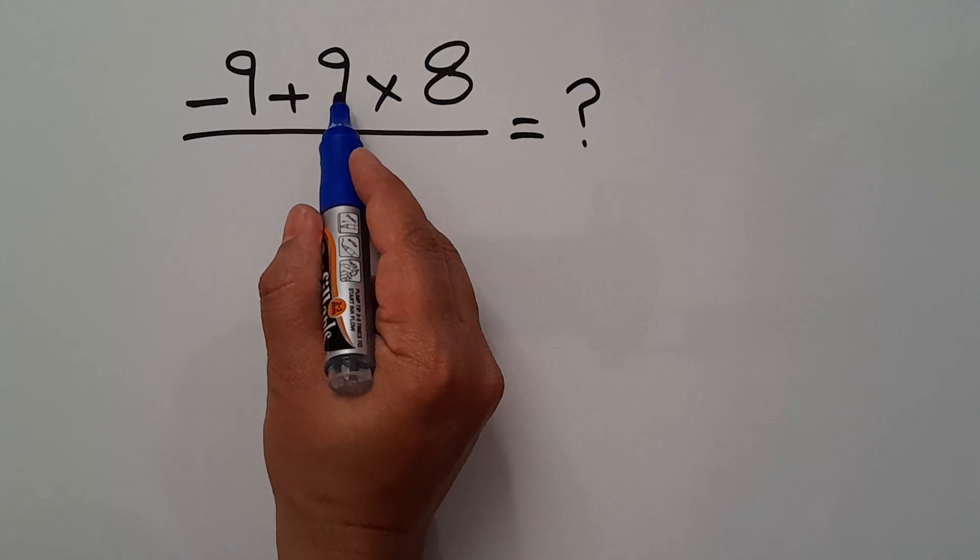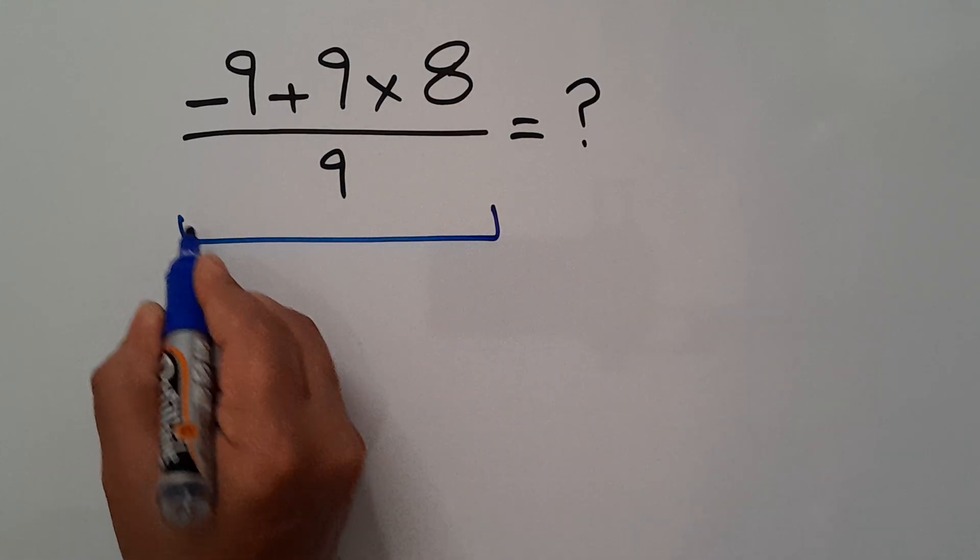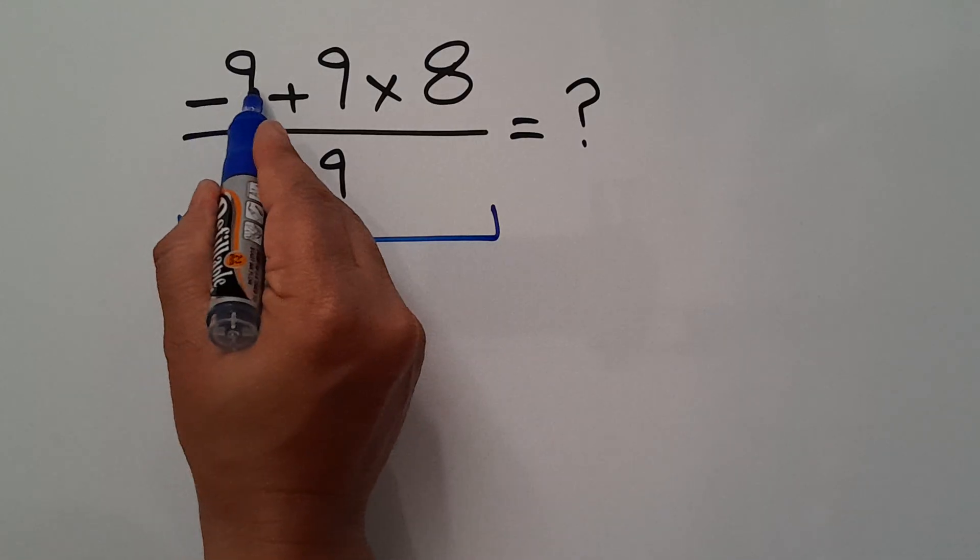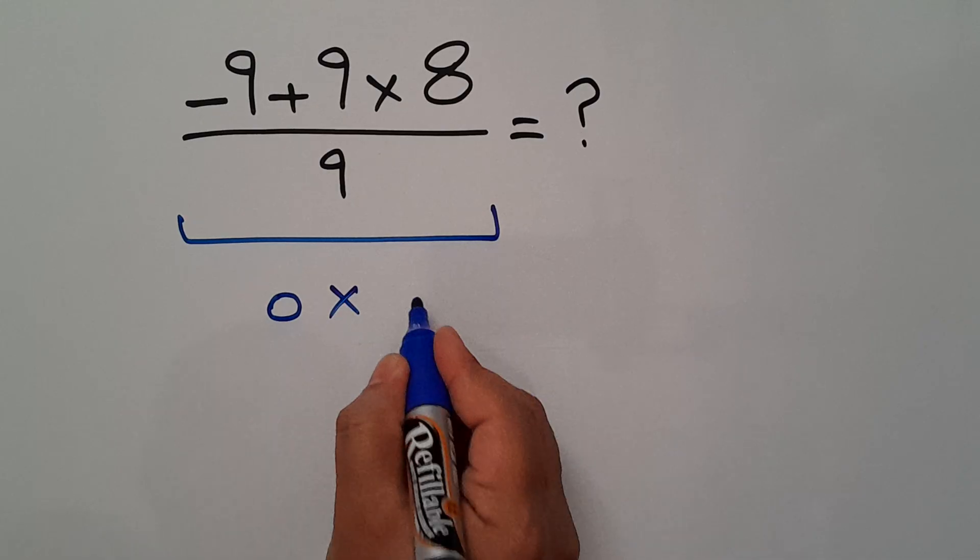Negative 9 plus 9 equals 0, so our fraction would equal 0 times 8...